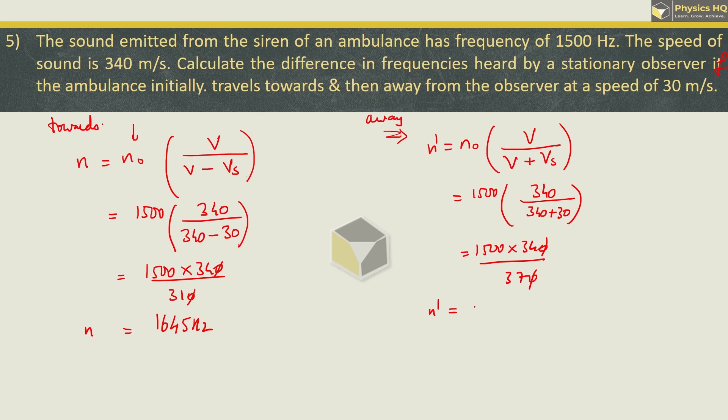Now they are asking calculate the difference in frequency. So difference in frequency will be n minus n dash, so 1645 minus 1378. This will give us 267 hertz. Hope you all understood this.